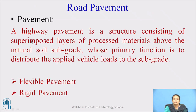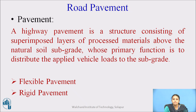Road pavement: a highway pavement is a structure consisting of superimposed layers of processed material above the natural soil subgrade, whose primary function is to distribute the applied vehicle loads to the subgrade. In other words, it is the topmost surface of the road which is directly in contact with vehicles, and it transfers the total load of traffic to the subsoil or subgrade.